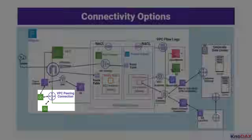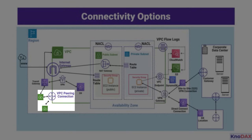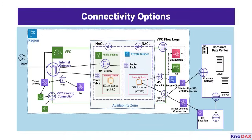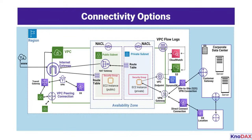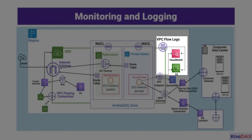VPC peering facilitates private communication between VPCs within or across AWS accounts without traversing the Internet. A transit gateway centralizes connectivity for multiple VPCs and on-premises locations, simplifying the network topology.